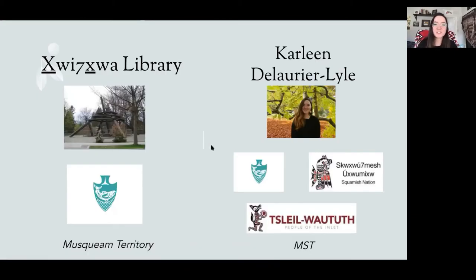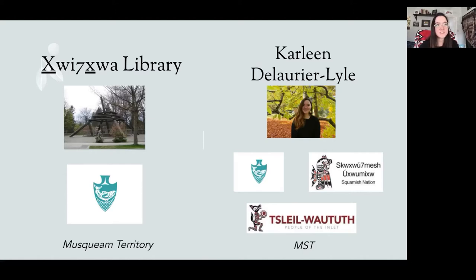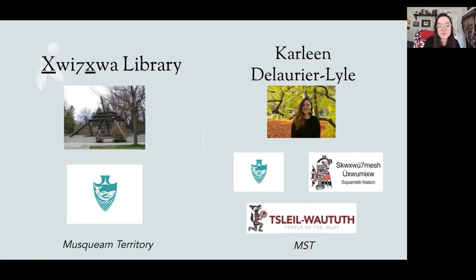Before we get started, I wanted to acknowledge that although I'm in a virtual place right now, Hui Hua Library and the UBC Vancouver campus is on the unceded territory of the Musqueam people. I'm currently coming to you from East Vancouver, on the shared territory of MST — Musqueam, Squamish, and Tsleil-Waututh Nations. Especially when we're talking about research guides, this is something we consider, not only in who we are as we build the guides, but what the impact is when we're distributing this in a public-facing way.